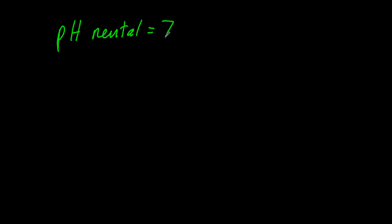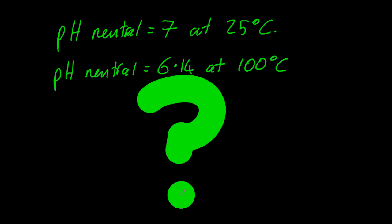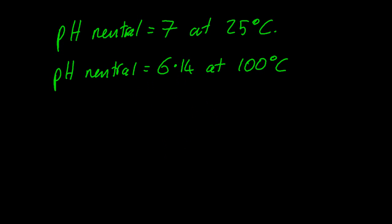So pH neutral is 7 at 25 degrees C, but neutral is 6.14 at 100 degrees C. Now that seems a little confusing. pH 7 is only neutral at 25 degrees C.